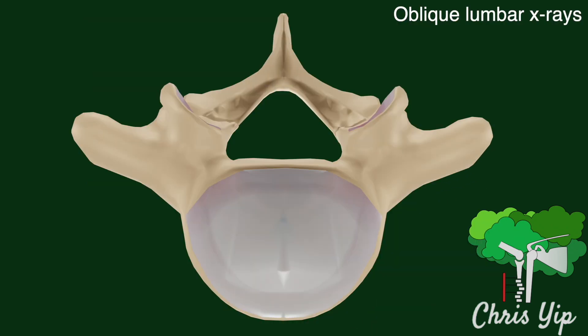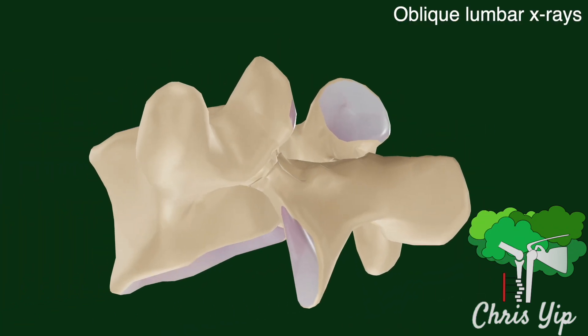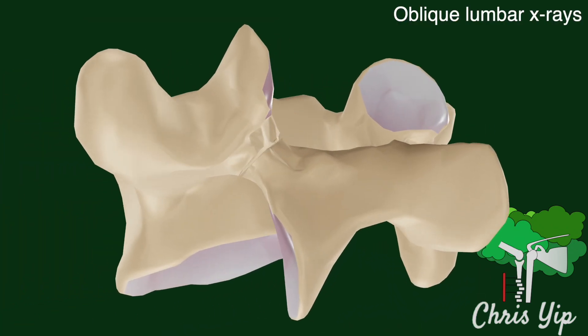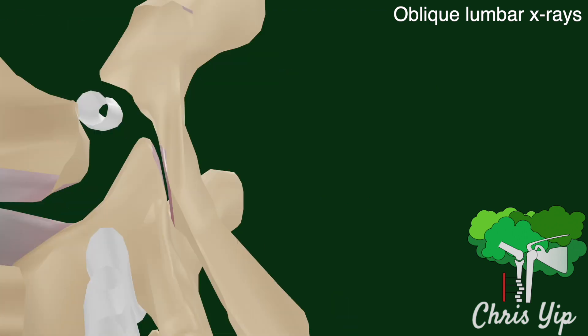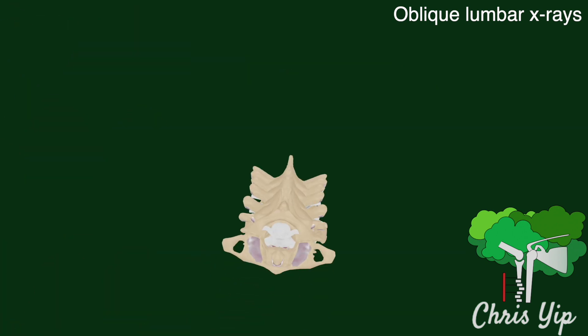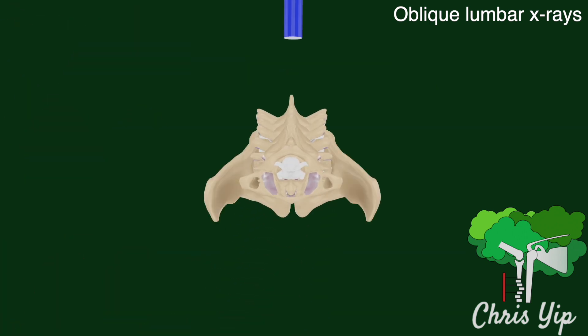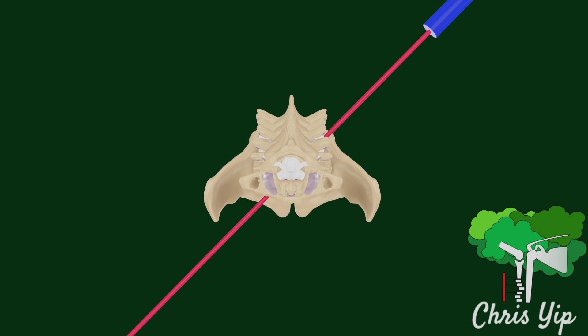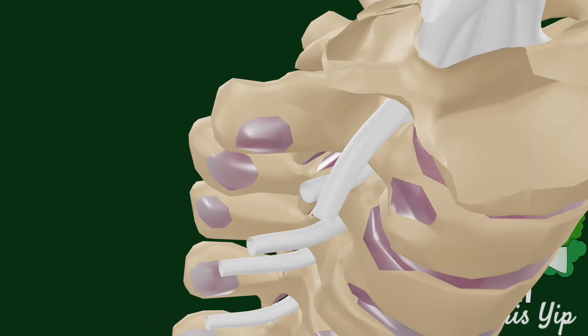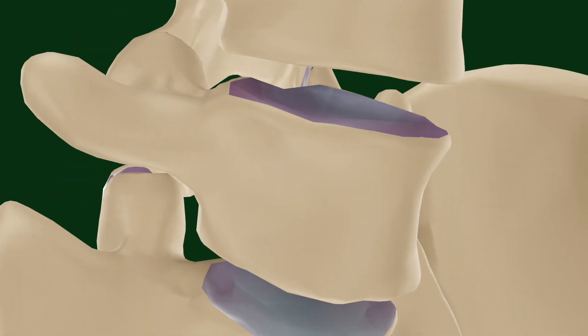The oblique lumbar x-ray view is useful for identifying pars interarticularis defects. To illustrate how this x-ray is taken, a blue cylinder represents the x-ray cathode with the red line representing the direction of the x-ray beams. The x-ray is directed 45 degrees from the sagittal plane, and the resulting image will be viewed from this perspective.